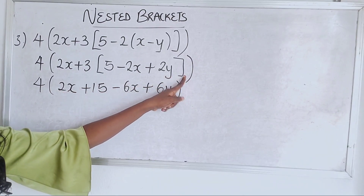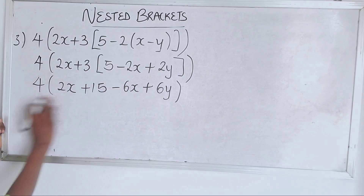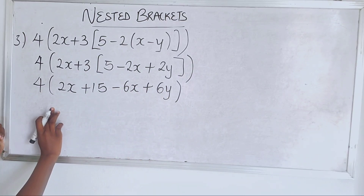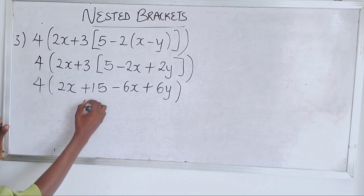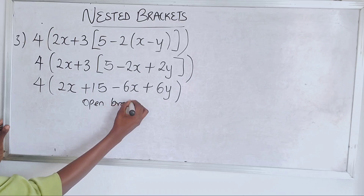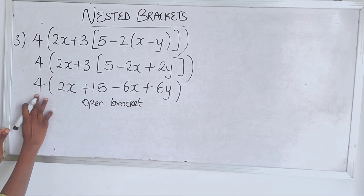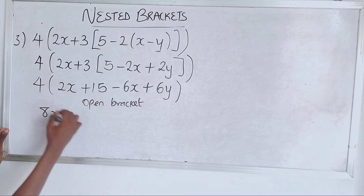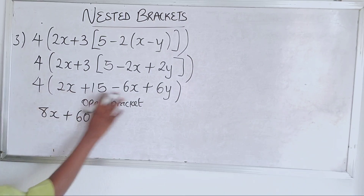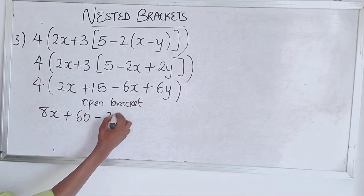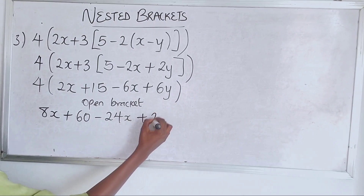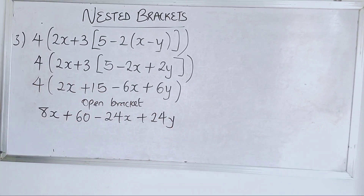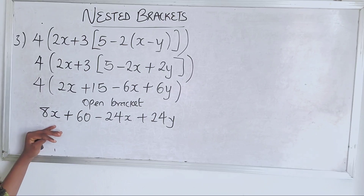Now moving on to the last expression — we expand or open the outer bracket. Four times two x is eight x; four times plus 15 is plus 60; four times minus six x is minus 24x; four times plus six y is plus 24y.